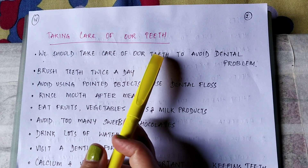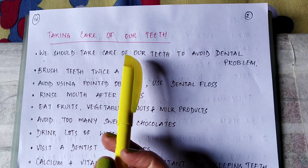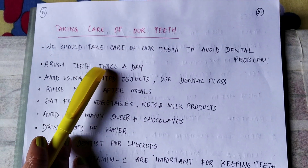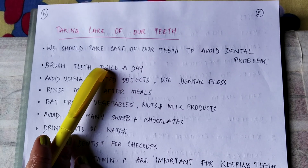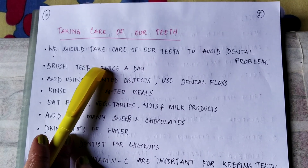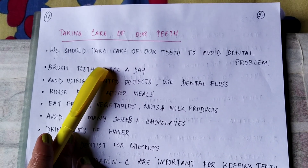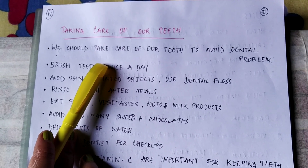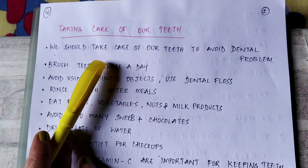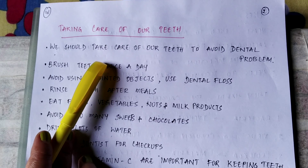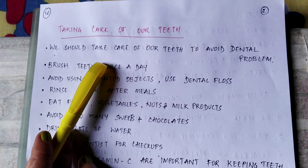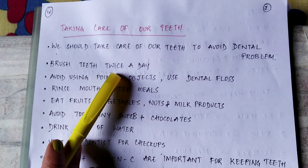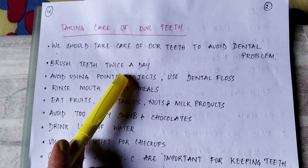We are going to first study about how to take care of our teeth. We should take care of our teeth to avoid dental problems. Once your permanent teeth grow, if they come out, your next set of teeth will not come out, so you need to really take care of your teeth.